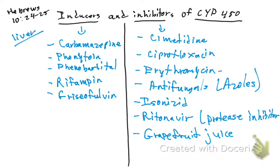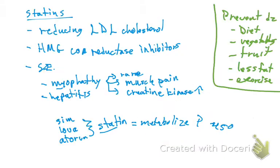Here is an important clinical scenario: erythromycin is an inhibitor of the CYP450. If a patient is doing well on a statin, and then gets a bacterial infection treated with erythromycin, the erythromycin inhibits CYP450 where the statin is metabolized — meaning the statin won't be working properly and cholesterol levels can rise again. This is why we must take a thorough medication history and avoid polypharmacy.